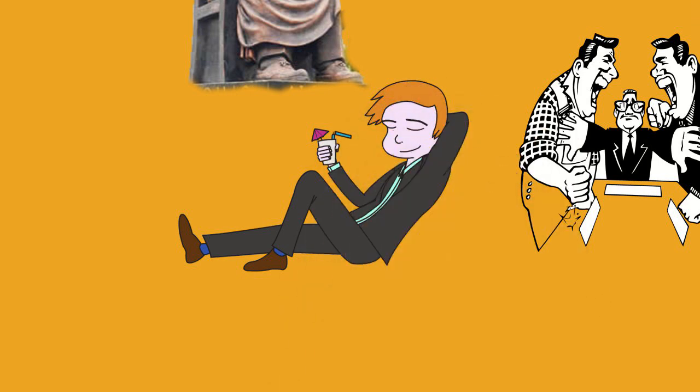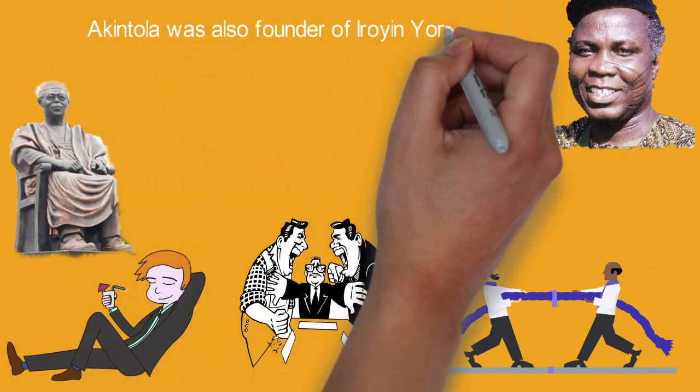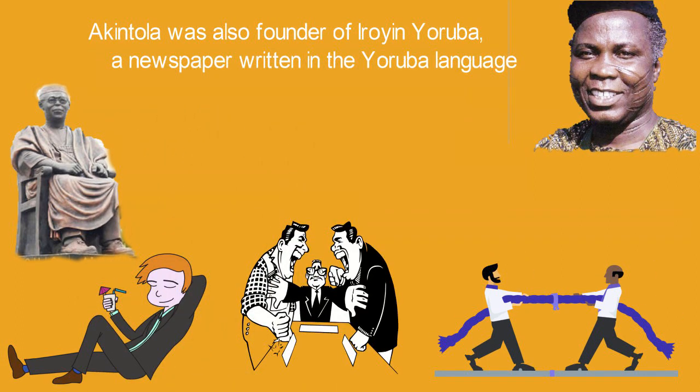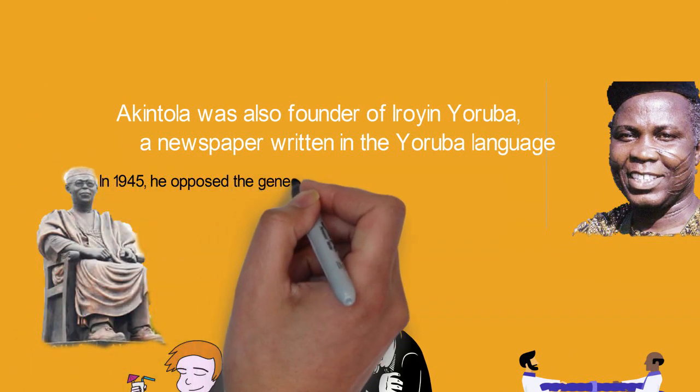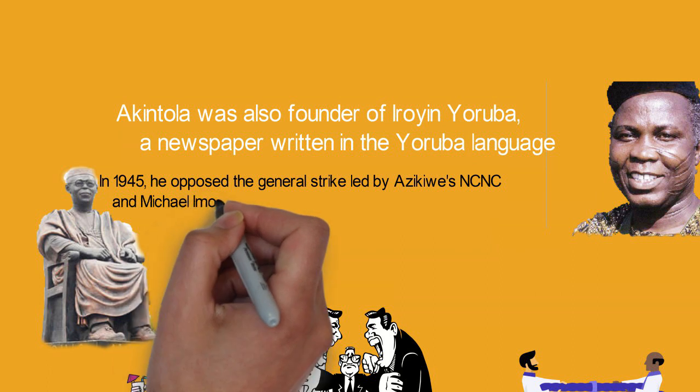Eventually, Akintola was restored to power even though he had lost the legal battle with the Judicial Committee on the Privy Council, then Nigeria's highest tribunal, as Premier in 1963.